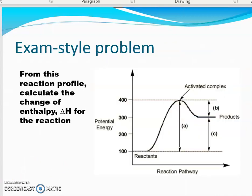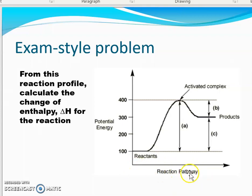Let's look at a problem from a reaction diagram, where enthalpy or potential energy is on the y-axis and reaction pathway — sometimes called reaction progress or time — is on the x-axis. To calculate the change in enthalpy, the first thing we have to think about is which line — A, B, or C — represents the enthalpy of the reaction. Pause for a minute, look at the diagram, and decide which single line you need to look at.